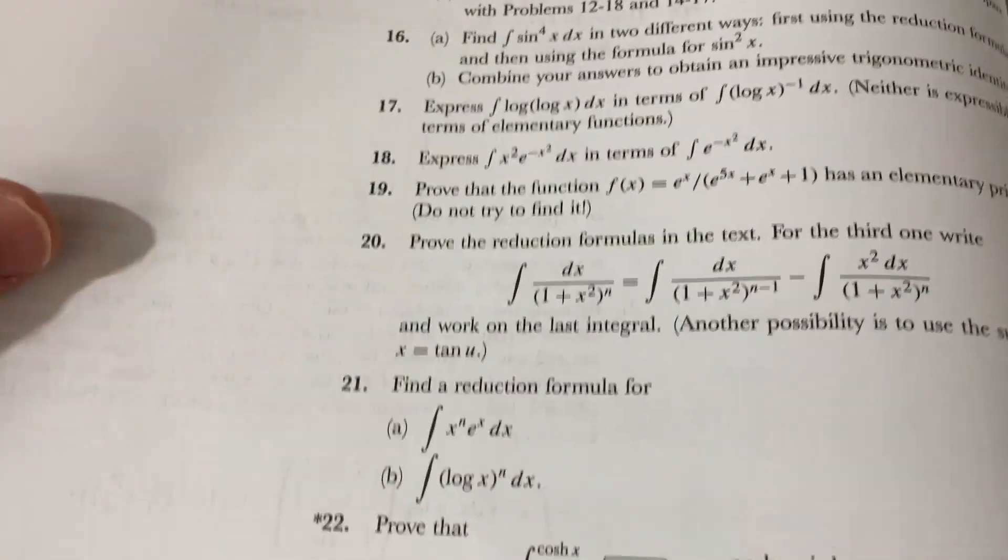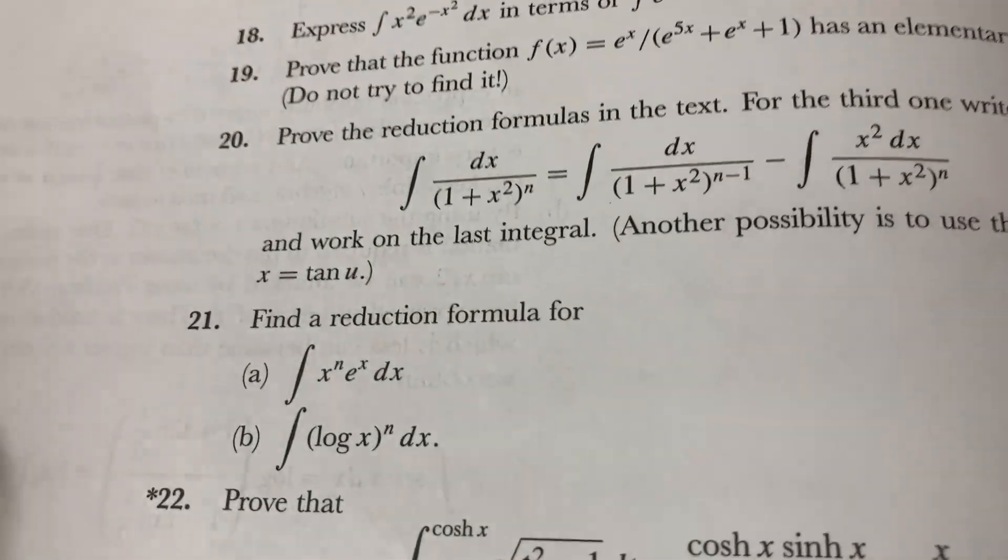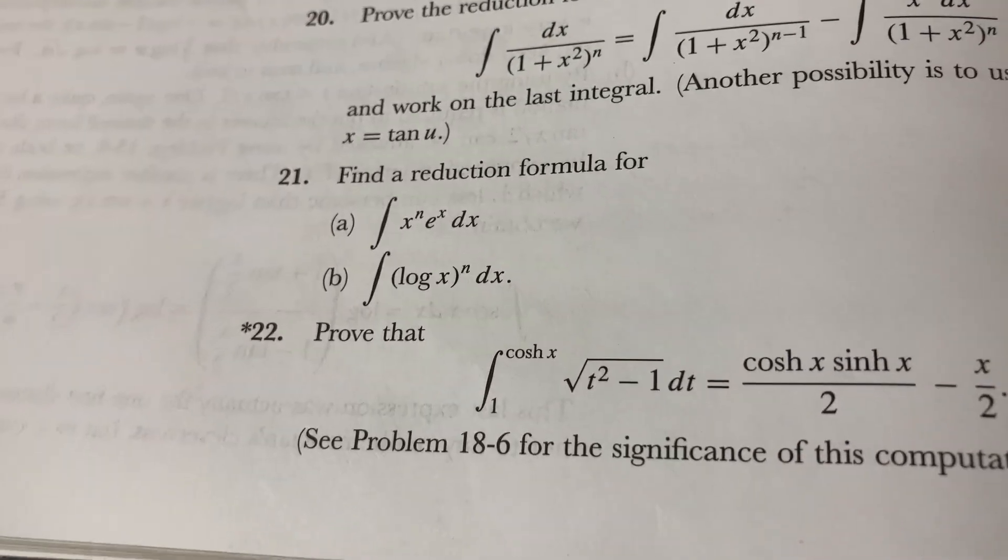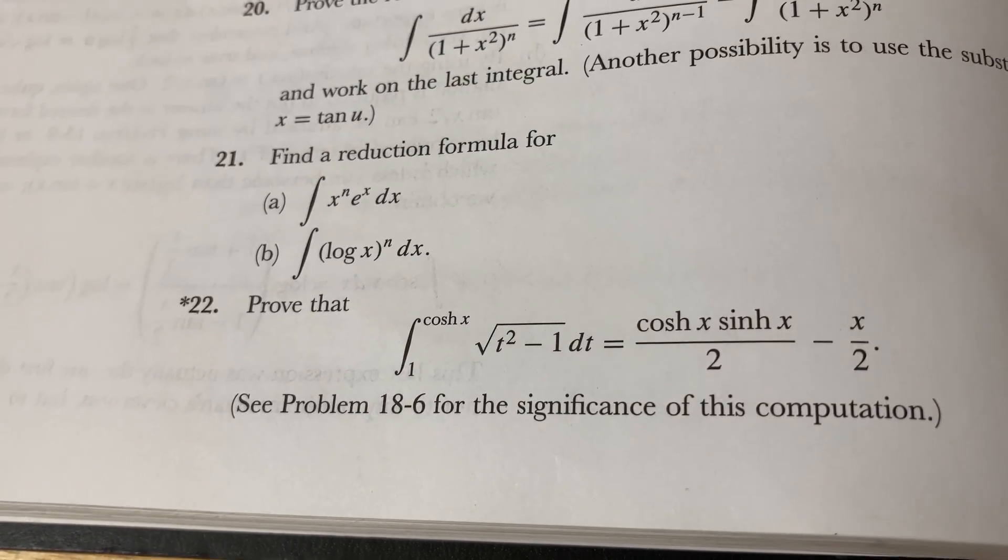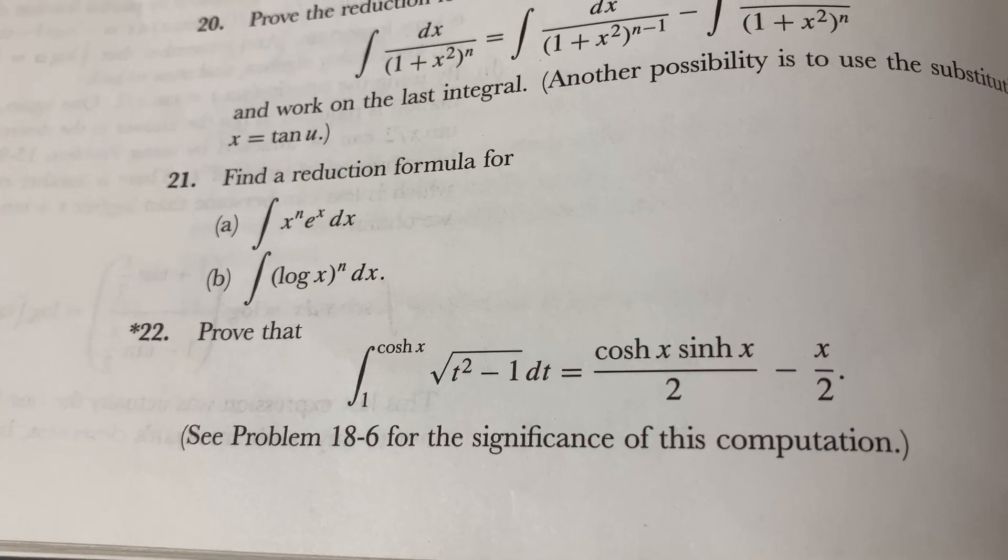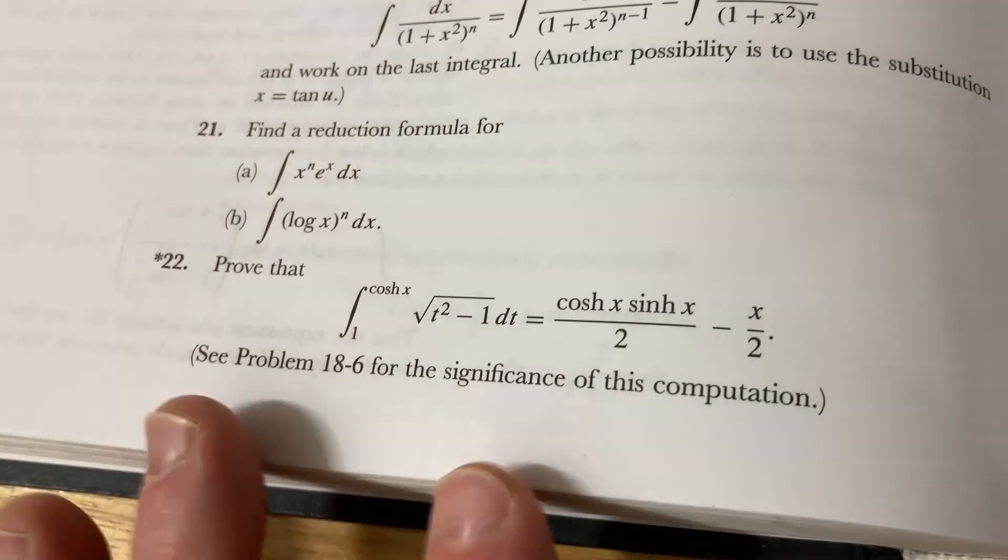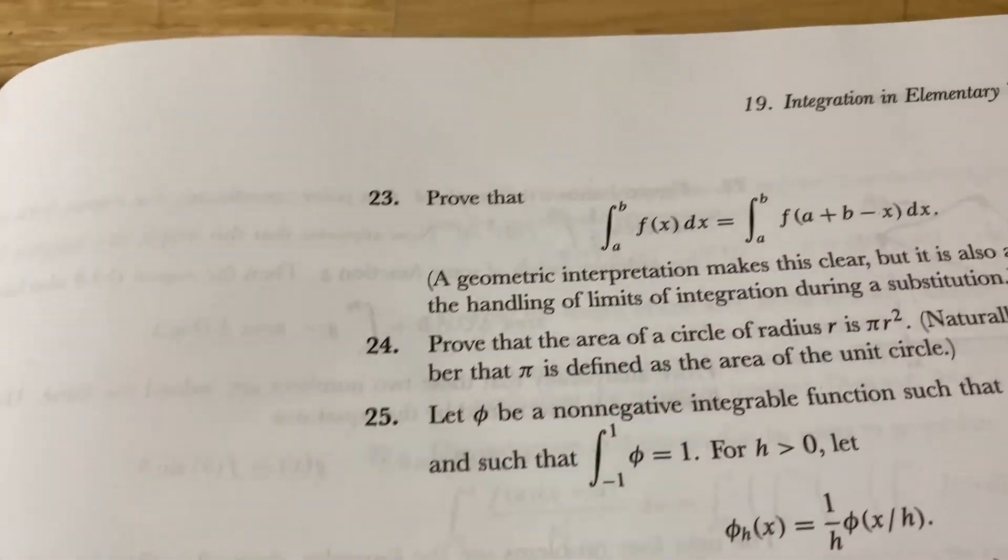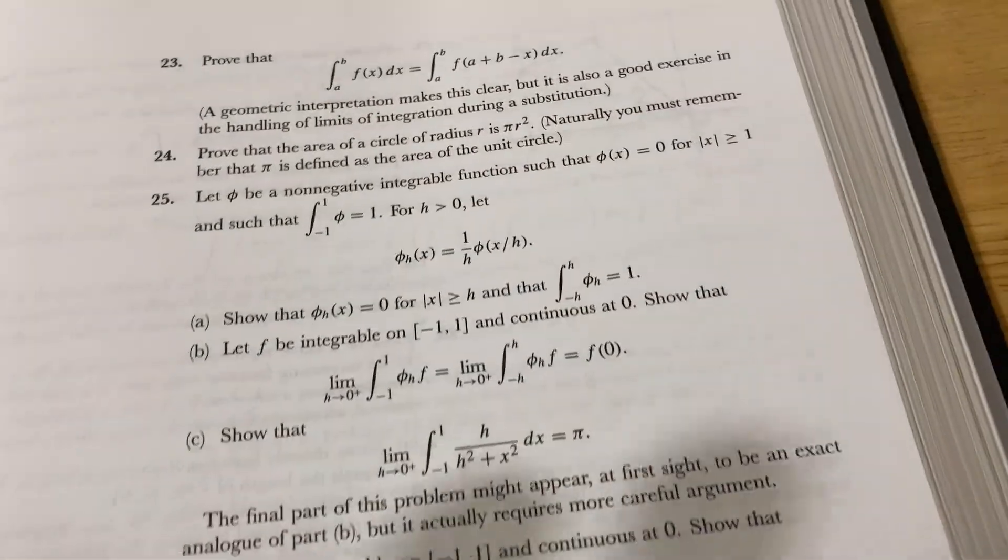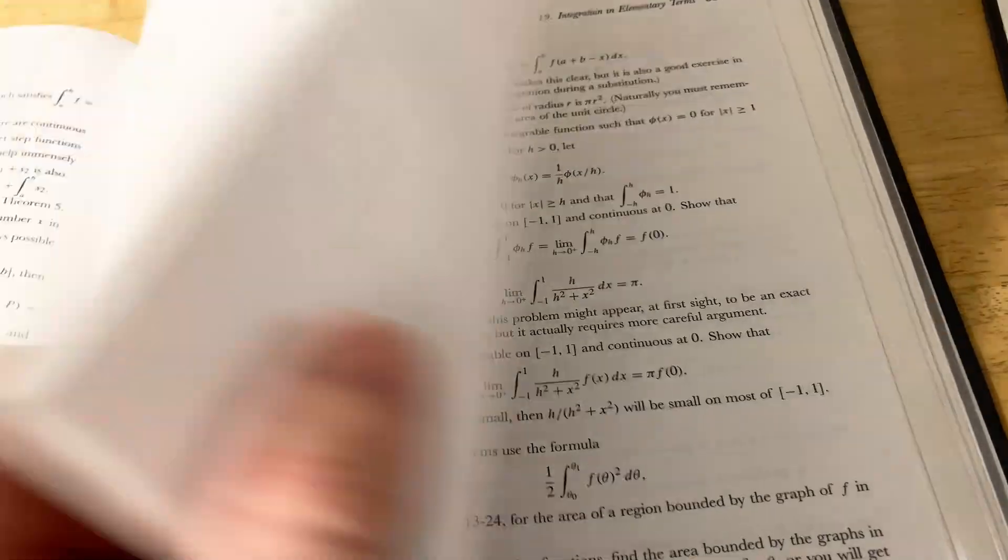So yeah, pretty cool. Reduction formulas. Find a reduction formula for x to the n e to the x. Oh, here's a proof. Oh, that looks cool. Yeah. Yeah. I kind of want to do that now. Like, I just kind of want to work through that. Yeah. Pretty cool book, right? Anyways, got carried away showing some stuff here in the book, but hopefully this gives you an idea of what the solutions manual is like.